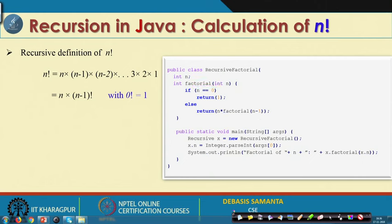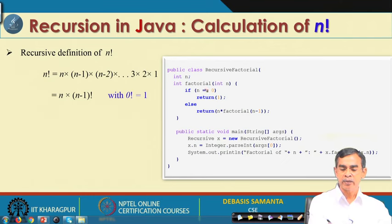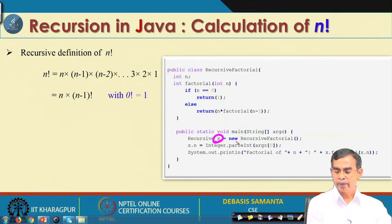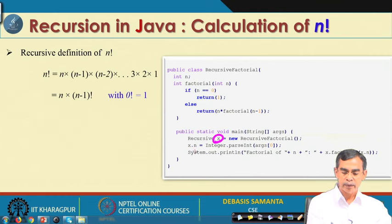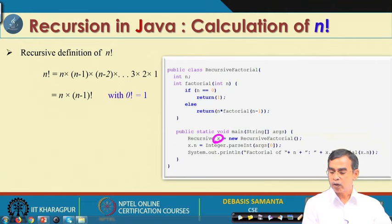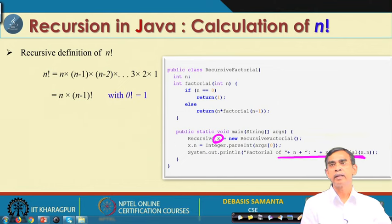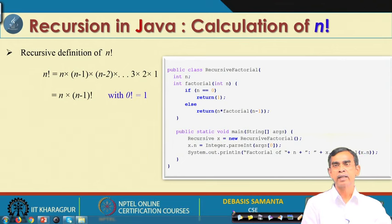In the main method, x is an object of class RecursiveFactorial, an integer value is read from the command line, and x.n stores the value. Then factorial(x.n) is called and the output gives the factorial of n. If you look at this program carefully you will be able to understand it. Practice more recursive programs to improve your understanding.